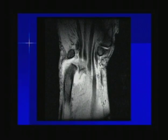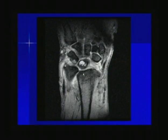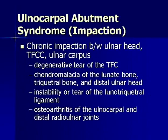In a 68-year-old woman with rheumatoid arthritis: extensive synovitis, marked ulnar-positive variance, complete tear of the triangular fibrocartilage, and extensive subchondral cyst formation in both the lunate and triquetrum — consistent with ulnocarpal abutment or impaction syndrome. This results from chronic impaction between the ulnar head, TFCC, and the ulnar carpus, usually beginning with a degenerative TFC tear, leading to chondromalacia of the lunate, triquetrum, and distal ulnar head, possible lunotriquetral ligament tear, and ultimately osteoarthritis of the ulnocarpal and distal radio-ulnar joints.